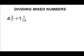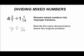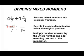Let's take the example 4 and 2 7ths divided by 1 and 1 14th. The first thing we're going to do is rename 4 and 2 7ths as an improper fraction. The denominator, which is 7, is going to remain exactly the same. To get our numerator, we're going to take 7 times 4, which is 28, and then we're going to add the number 2, which would give us 30.